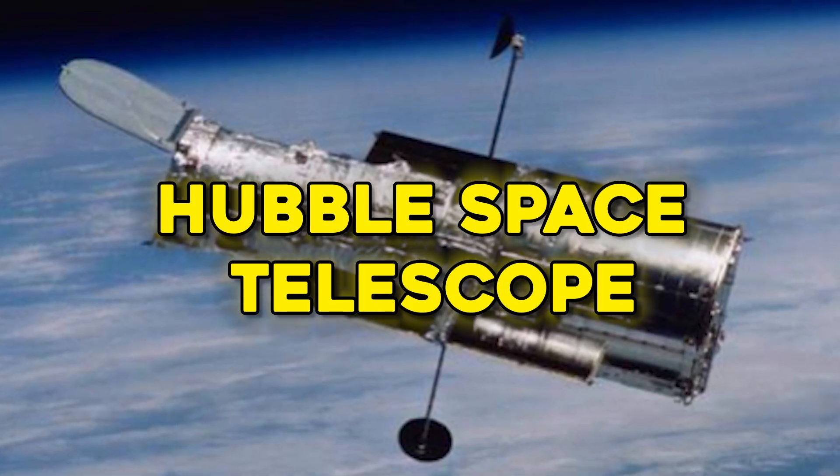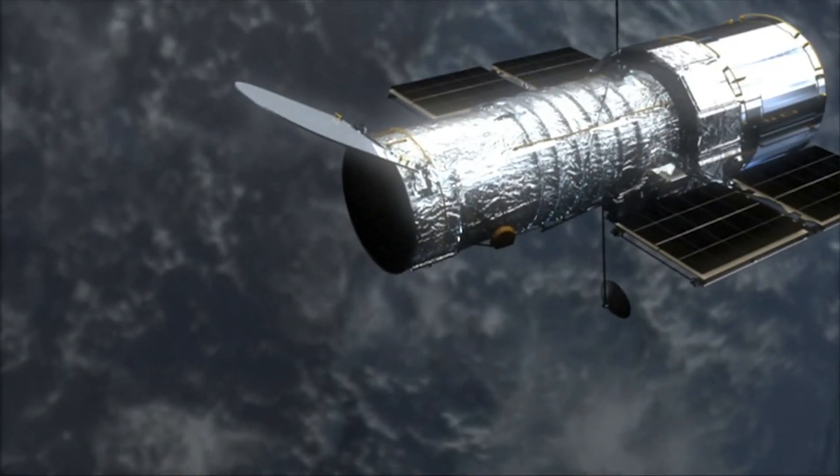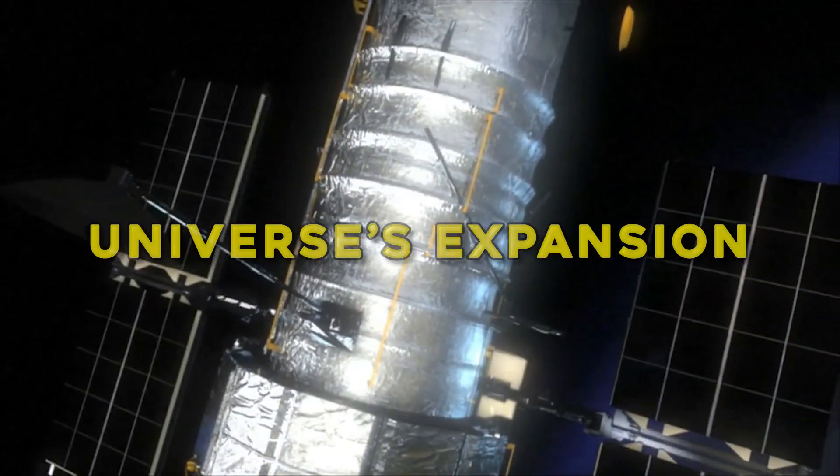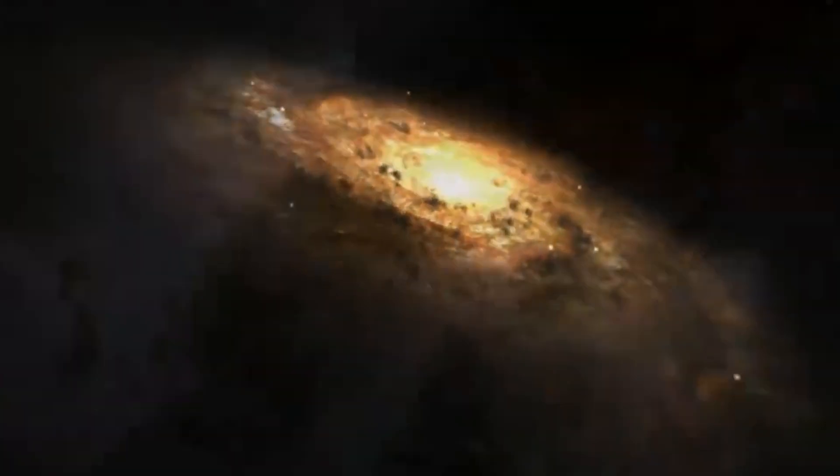The Hubble Space Telescope, for all its monumental contributions, began to struggle at redshifts beyond eight or nine, where galaxies appear so dim and so redshifted by the universe's expansion that they blend into the cosmic background.